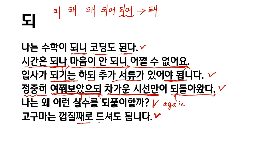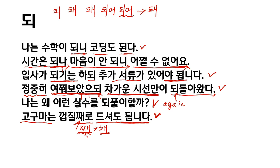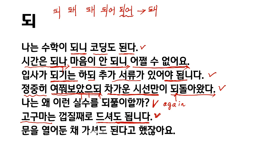고구마는 껍질 채로 드셔도 됩니다. 도 되다 means 'okay/allowed.' 드셔도 됩니다 — sweet potato 껍질 채로. Many people write 껍질째, but it should be written 껍질 채로. This 채 is not accepted as standard Korean spelling if written as 째. 문을 열어 둔 채 가셔도 된다. This 채 is 'attendant circumstance.' You can go out with the door kept open.